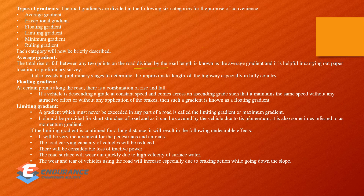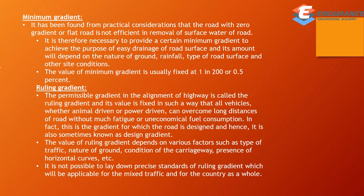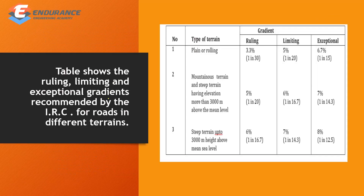Limiting gradient is the maximum gradient. Minimum gradient is 1 in 200 or 0.5%. Ruling gradient is the permissible gradient used in a highway alignment. For plain terrain, the ruling gradient is 3.3% and the limiting gradient is 5%, except 6.7% for steep terrain. The steep terrain height is more than 3,000m.